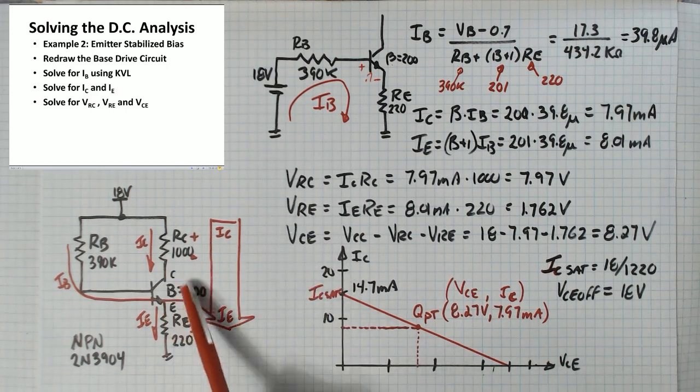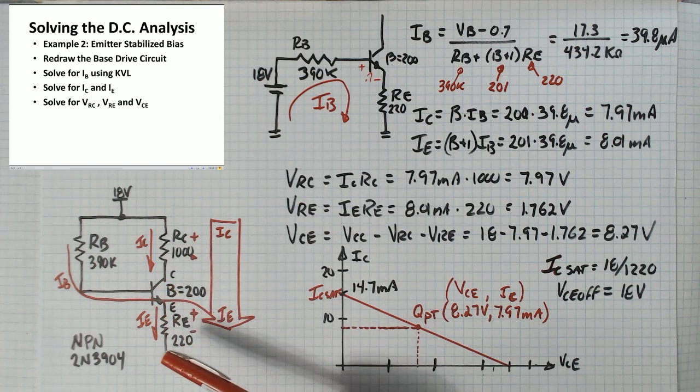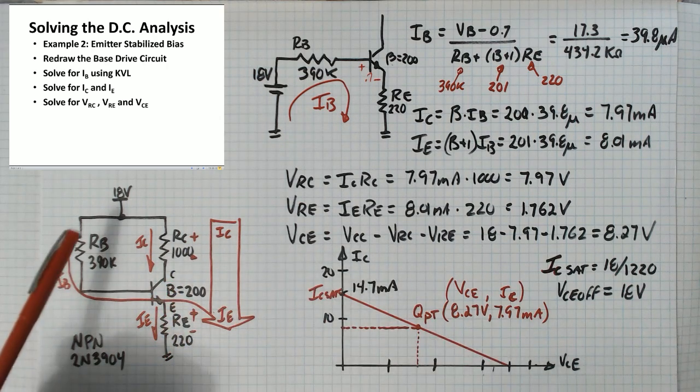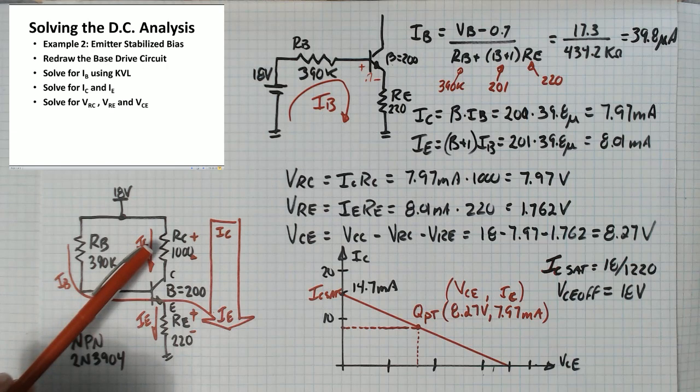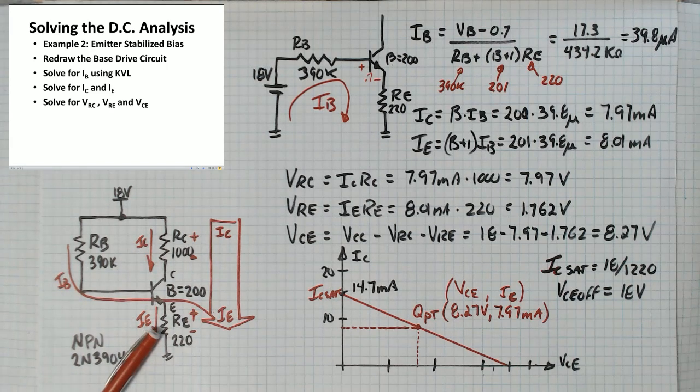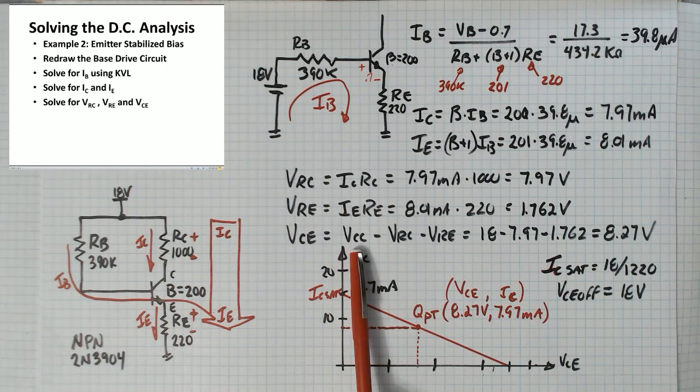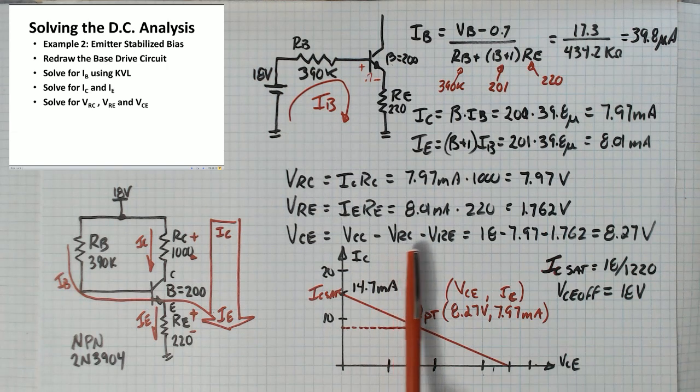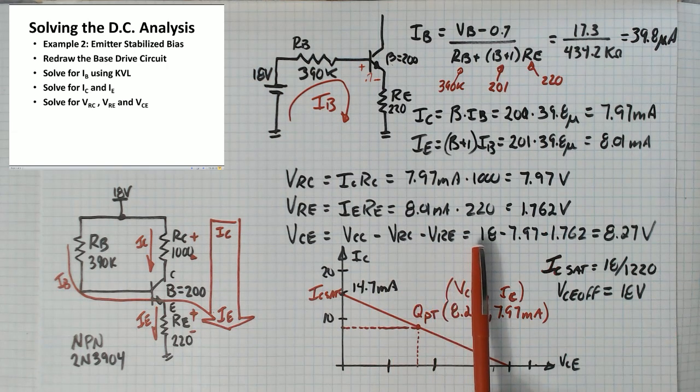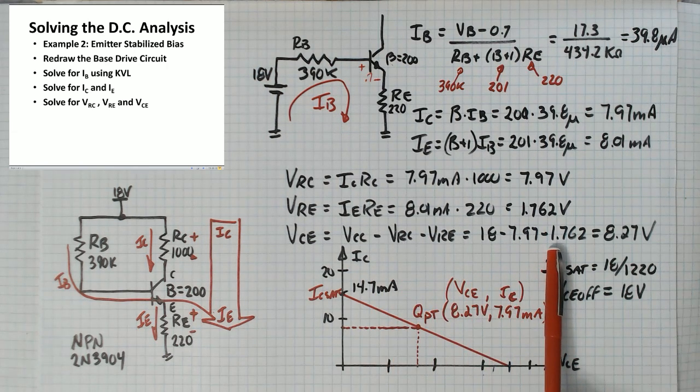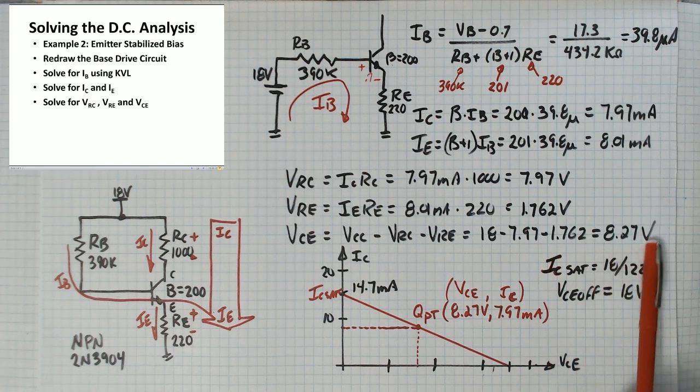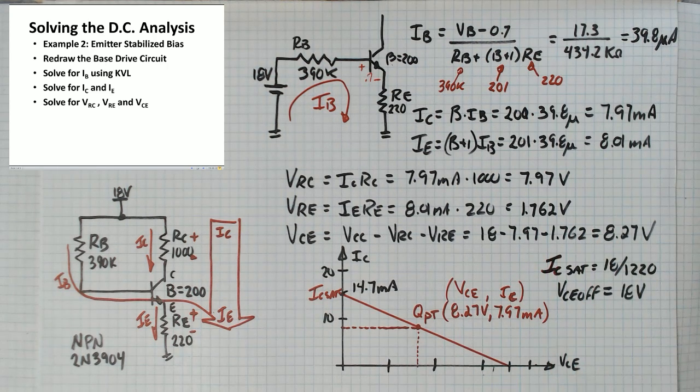VCE, this is the voltage across the transistor between these two terminals. Well that's just going to be 18 volts minus the voltage here minus the voltage there. So it's VCC minus VRC minus VRE, 18 minus 8 minus 1.76, you got about 8.27 volts across it.